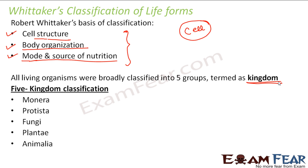Now, what were the reasons why Whittaker's classification became successful? The first reason was that he took into account all living organisms — plants, animals, microorganisms, birds, fishes, human beings — everything was included in these five kingdoms. The second reason was that the basis of classification was the most basic characteristic of every living being: the cell. Whittaker gave a lot of importance to cell structure, cell organization, and mode and source of nutrition of the cells, and that is why the classification was proper.